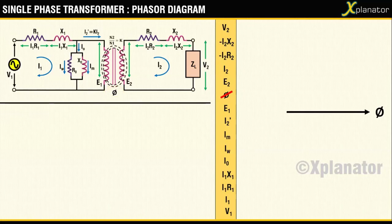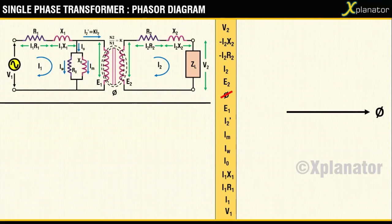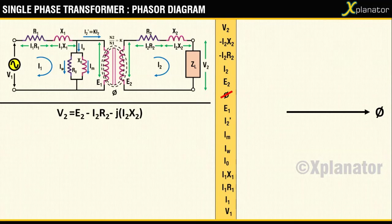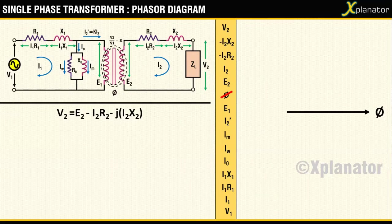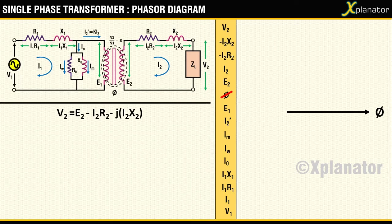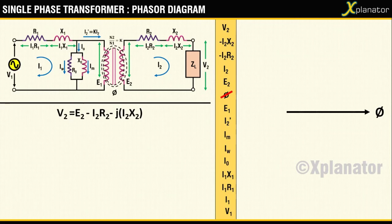The second term to be drawn should have some relation with this reference line. The terms are drawn from the output end, and with that convention, V2 has to be drawn. Using KVL in the secondary circuit, you get V2 equals E2 minus I2R2 minus j times I2X2. As can be seen from this equation, there is no direct relation between V2 and Phi, so you cannot draw V2 right away. You have to draw the three terms in that equation and later add them up to get to V2.